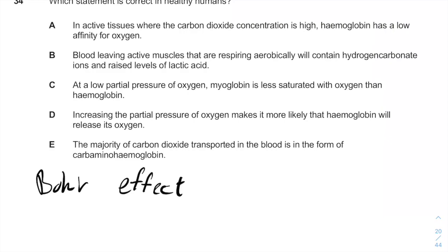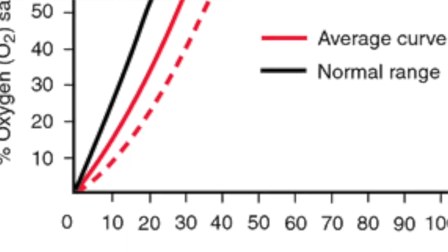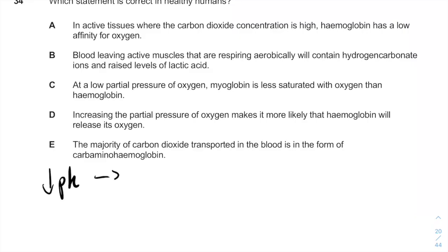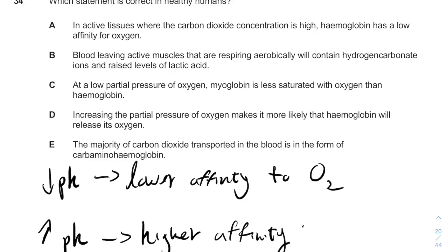The Bohr effect tells us, via a diagram, the affinity of oxygen to the hemoglobin of blood cells based on the acidity of the surroundings. When we have a lower pH, we will have lower affinity to oxygen. When we have a higher pH, we will have higher affinity to oxygen.